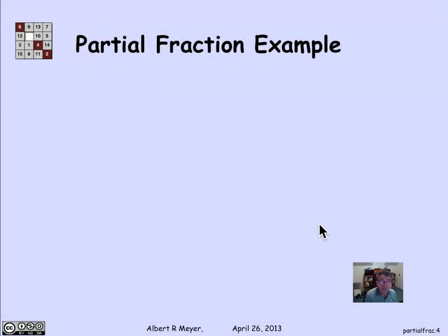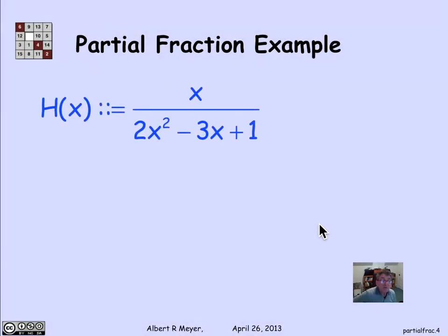Let's do an example to illustrate that, and then we'll formulate it more generally. Suppose that h(x) is this quotient: the numerator polynomial is x, and the denominator polynomial is 2x² minus 3x plus 1.